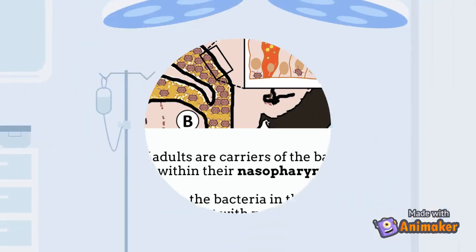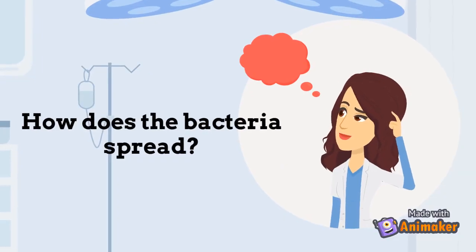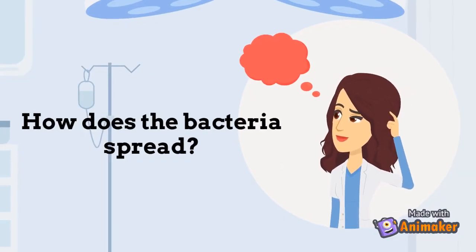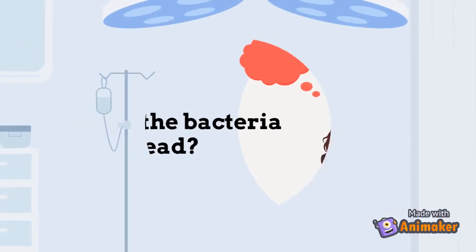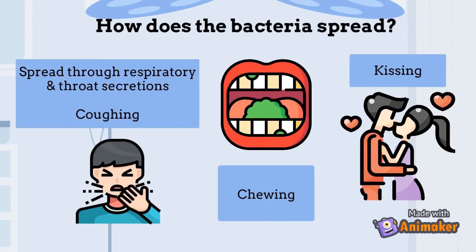So how does this dangerous bacteria spread to other people? The bacteria Neisseria meningitidis is spread through respiratory and throat secretions, such as through saliva or spit. It can be spread through coughing, chewing, food which is infected with the bacteria, or kissing. It generally takes close or lengthy contact for the bacteria to spread, as they are not as contagious as other bacteria, such as those responsible for the common cold or flu.